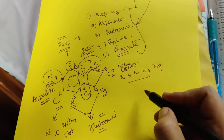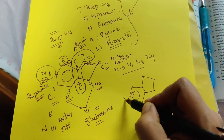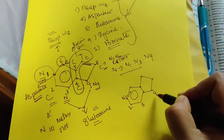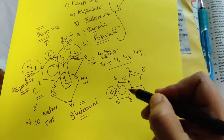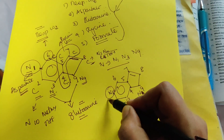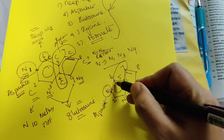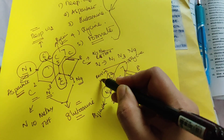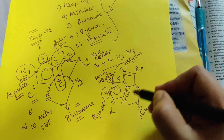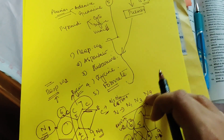Let us revise the structure of purines. The numbering is 1, 2, 3, 9, 4, 5, 6, 7, 8 with a double bond at 7-8. N1 is given by aspartate; N3 and N9 by glutamine; C4, C5, C7 by glycine; C6 by respiratory carbon dioxide; and C2 and C8 by formate. This is how the purine structure is obtained from the 5 ingredients, converting ribose 5-phosphate to purines.